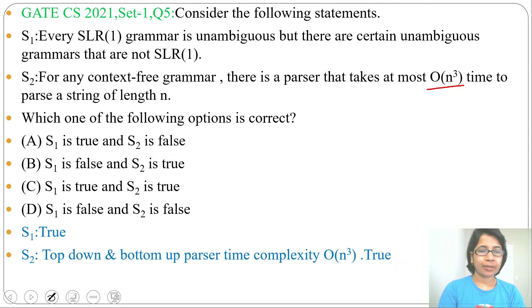Now check from the options where S1 and S2 both are true. In option C, S1 is true and S2 is true. So the answer will be option C. Both statements are true. I already discussed these two statements during compiler design lectures.